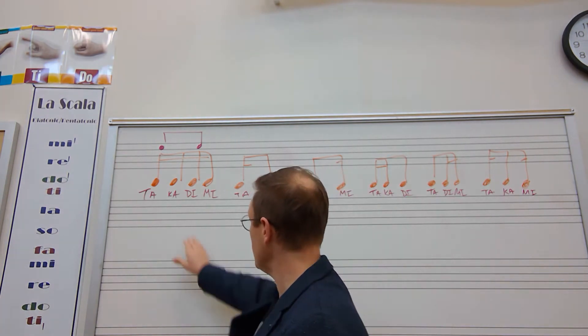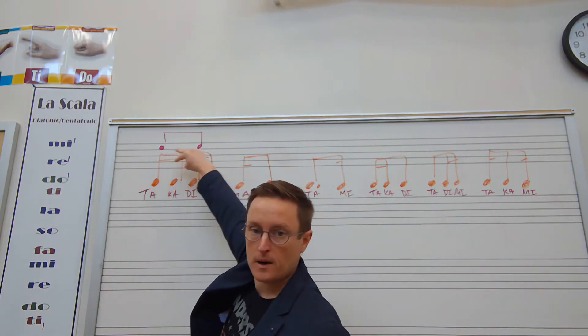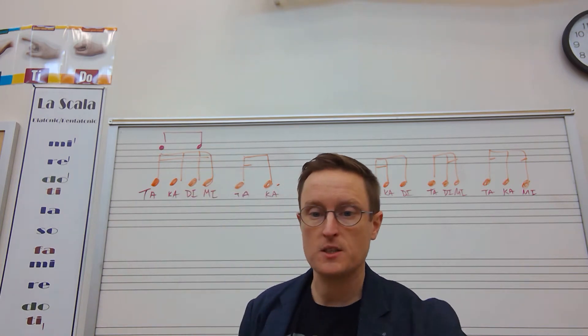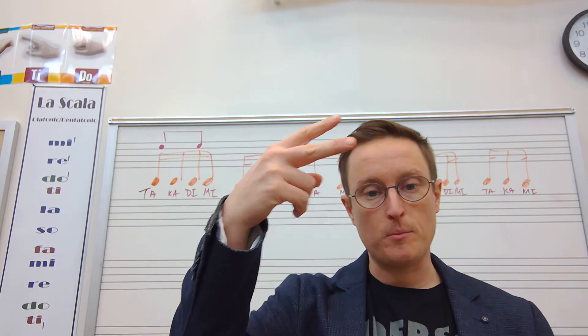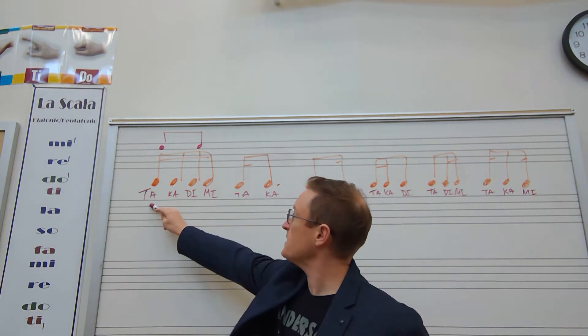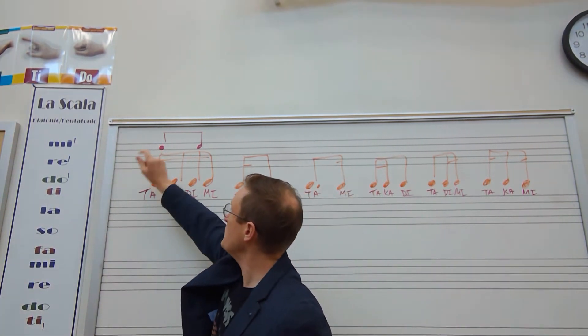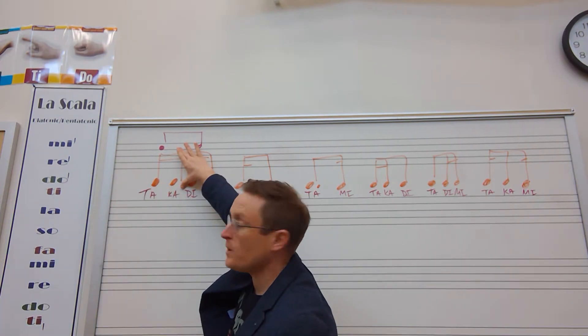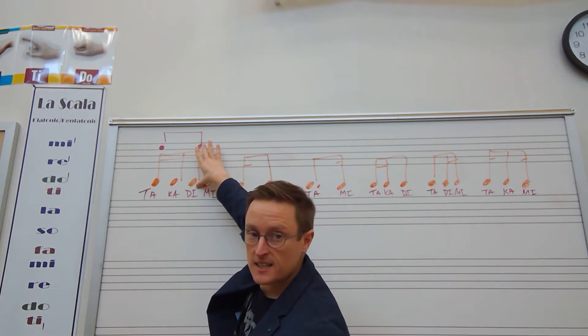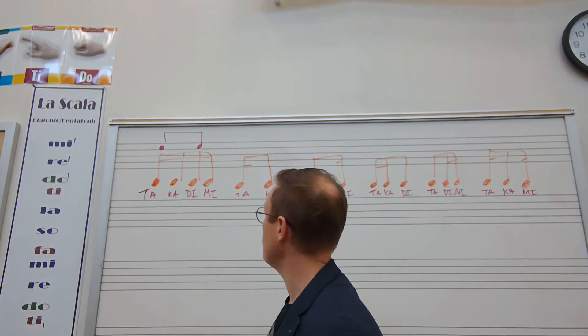Sixteenth notes look like this. Taka di mi. They have two bar lines on them or it's possible that they could have two flags on them. So instead of a bar line if they're individual, two flags. And in our system, it's ta-ka-di-mi. Which is really neat because the ta fits in with one eighth note, which is worth two sixteenths. And the di fits right in with that second eighth note, also called di, and it has those two sixteenths inside of it.